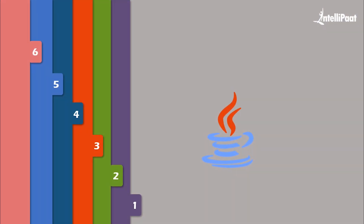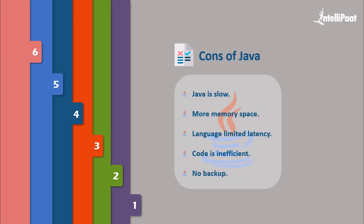Now let's discuss the cons of Java. Java is comparatively slower than other languages — this is one of the biggest drawbacks. Java also takes more memory space than native programming languages like C and C++, and this problem hasn't been overcome yet. There is also limited latency-critical tuning — if you need to spare every millisecond, Java is not the best choice. Java's architecture produces portable code, but the method used to create this code is inefficient. Lastly, Java doesn't guarantee backup — it is mainly for storage and less efficient for data backup, which affects Java's overall rating.